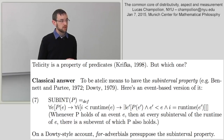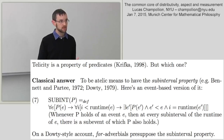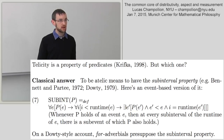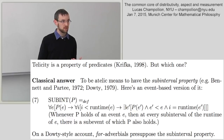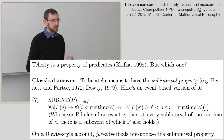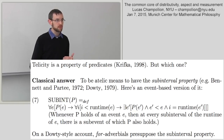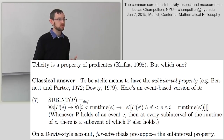The sub-interval property says that if a predicate holds of an event e, then at every sub-interval of e's runtime there is a sub-event of which that same predicate holds. 'Run' has the sub-interval property: whenever it applies to a running event, at every sub-interval there is a part of that event which is itself a running event. But this is an idealization: certain predicates compatible with for-adverbials lack the sub-interval property at very short temporal intervals, something Dowty was already aware of.